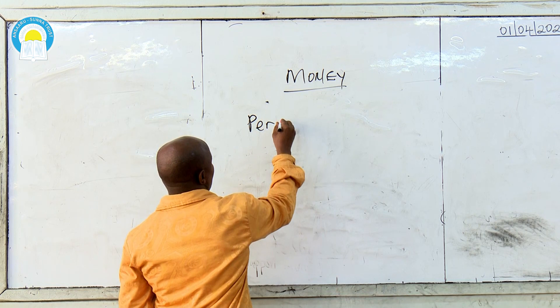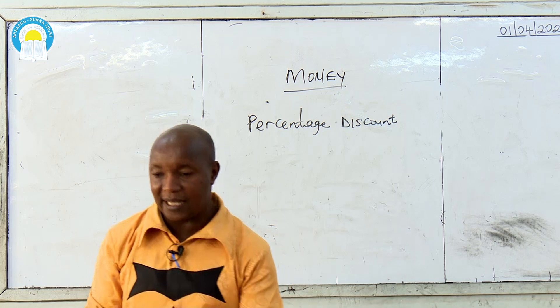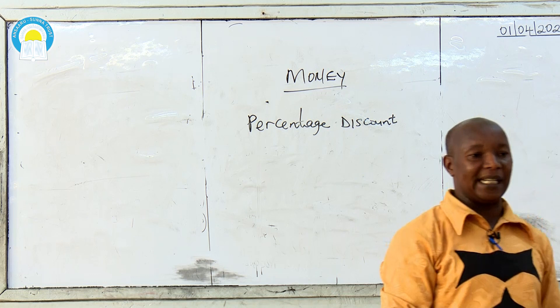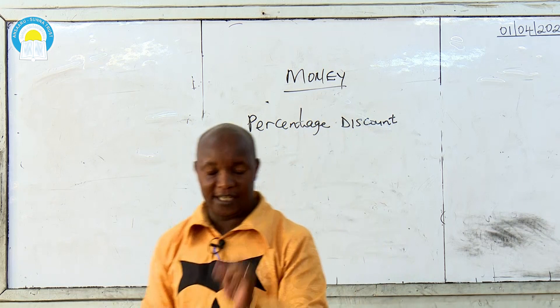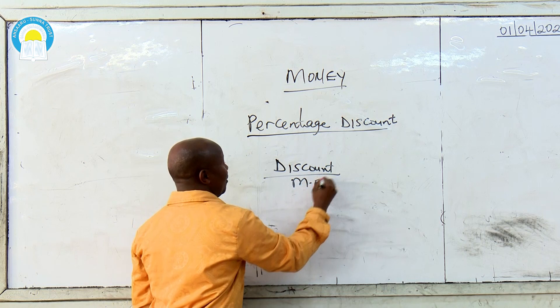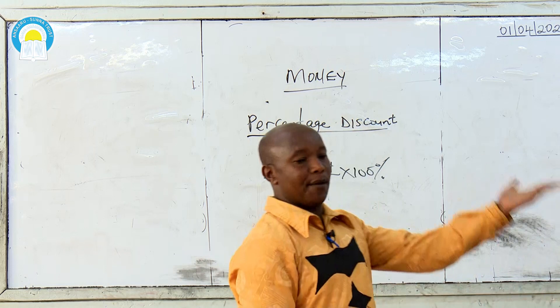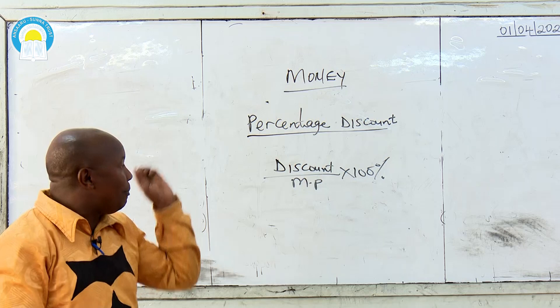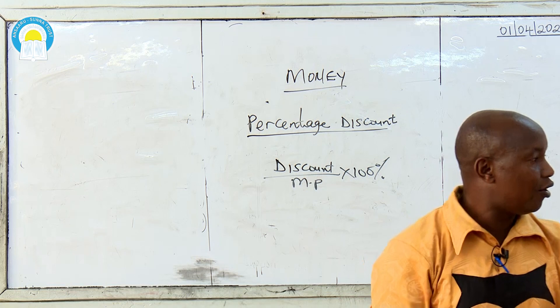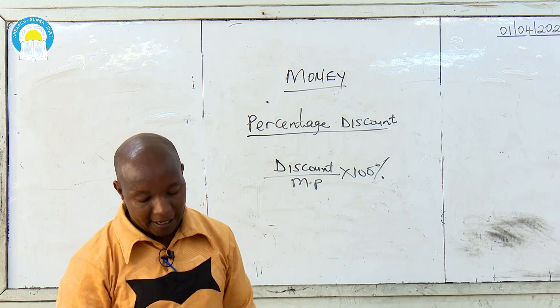Percentage discount. This is a very common question in exams, both external and internal. How do you get a percentage discount? We have only one formula: discount divided by the marked price, multiplied by 100%. I want you to differentiate this — percentage profit and loss were over the buying price, but percentage discount is different. It is discount divided by the marked price, multiplied by 100%.